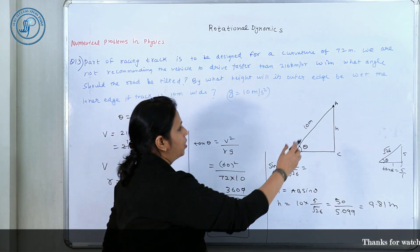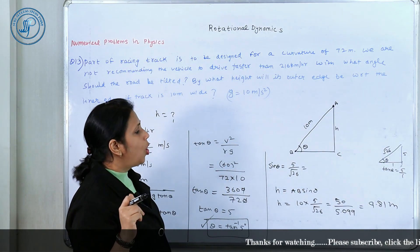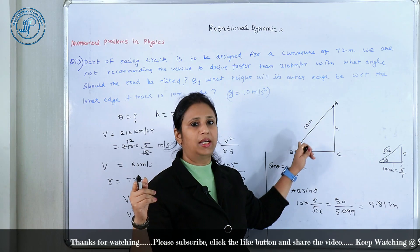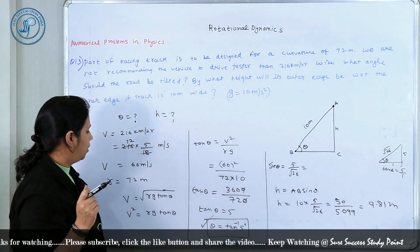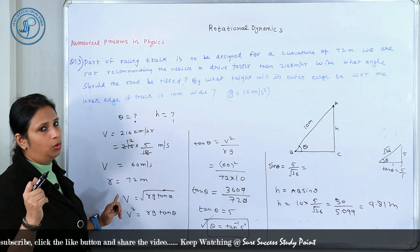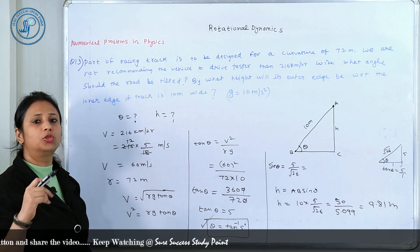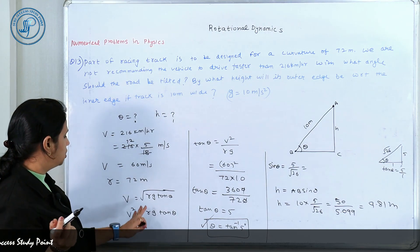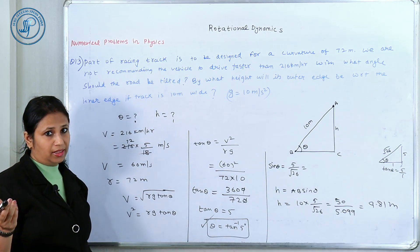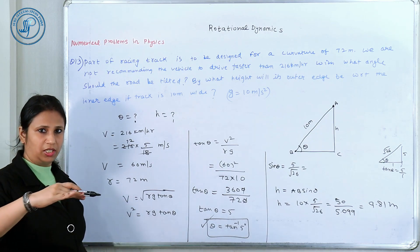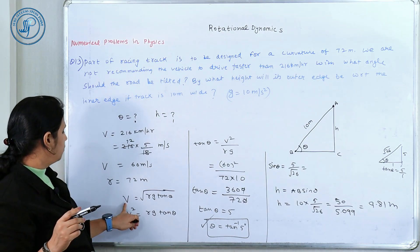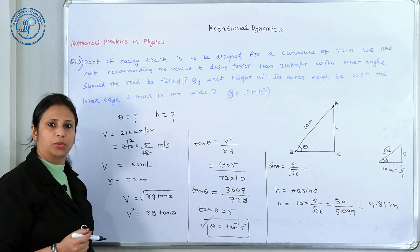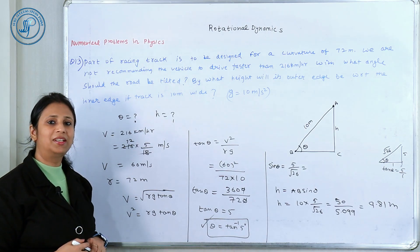Remember: the outer edge is above the inner edge by this height difference. When the track width or distance between rails is given, always take it as the hypotenuse. When mu is not given, the formula for speed directly becomes v = √(rg·tan θ). If tan θ = 0, meaning no banking, then v = √(rg·μ). Keep these points in mind. Today's episode ends with this question — see you in the next lecture, till then keep practicing.